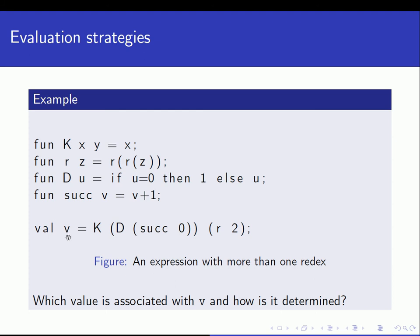So under call by name we got the value one back, but under call by value we got an undefined value because the computation was infinite. It's important to understand this difference: in call by value, the argument expression is fully evaluated before it's sent to the function. In call by name, the argument expression is not evaluated until very late - that's why it's referred to as lazy evaluation or late evaluation in lambda calculus.